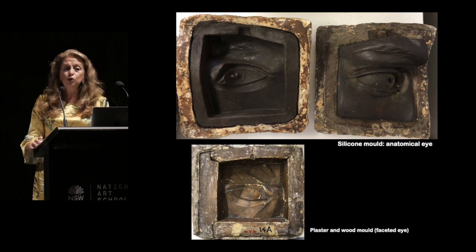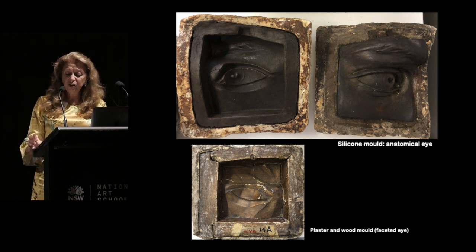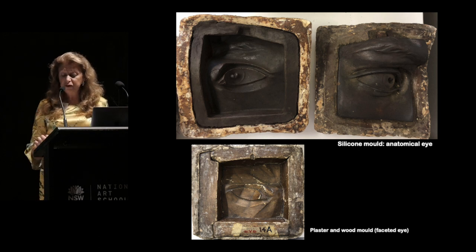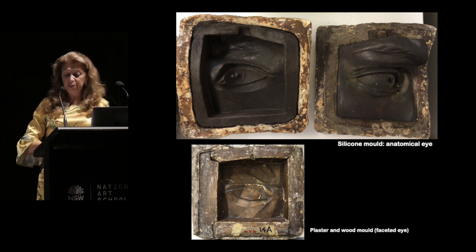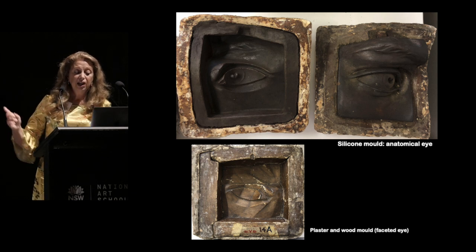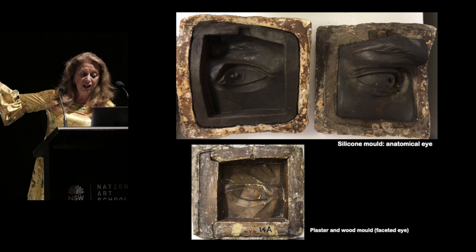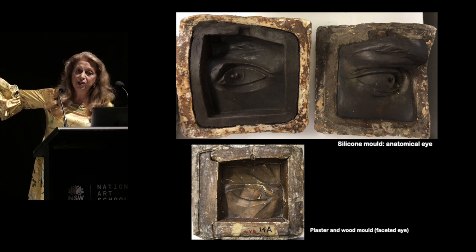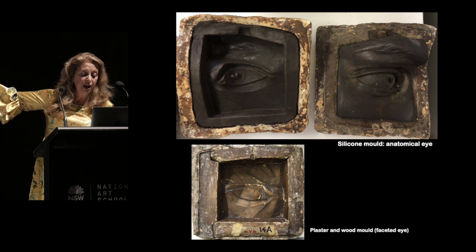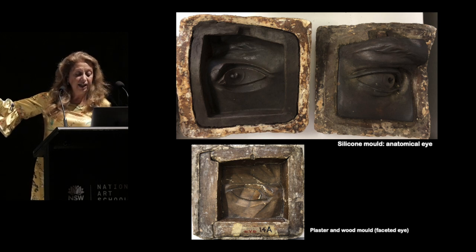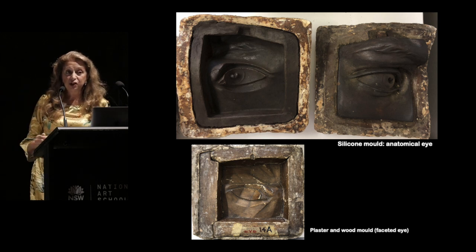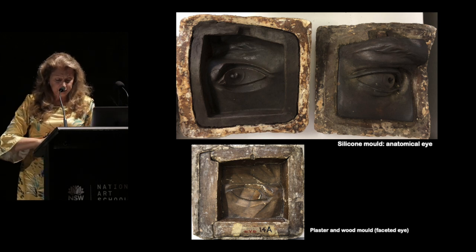The school in 1910 had on hand not only the features of David, but an extensive collection of moulds. Here you actually see two examples — the silicon mould is a much newer one, and the one of the faceted eye is an older plaster and wood mould.